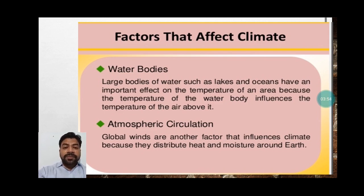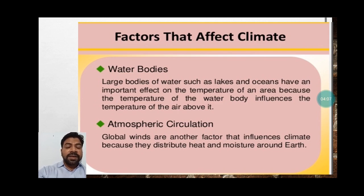Atmospheric circulation takes place because hot air rises due to its light weight and cold air comes down due to its heavy weight. This is why wind starts moving, and this circulation affects the climate of any place — it can convert a dry region into a wet region and a wet region into a dry region.